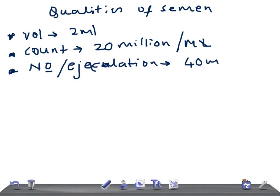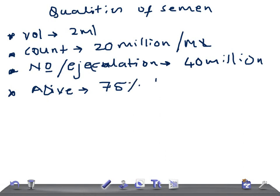To clarify the difference: the count is 20 million per ml, but if a sample has a minimum volume with a total sperm number of 40 to 50 million, that's acceptable. The next important point is viability — how many sperms are alive. Even if the count is adequate, if they are not alive and not active, there won't be any fertility. A minimum of 75% of sperms should be alive.